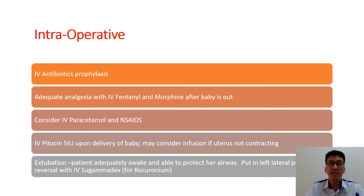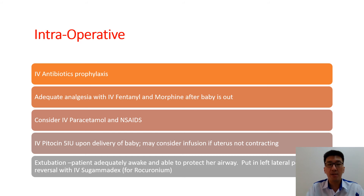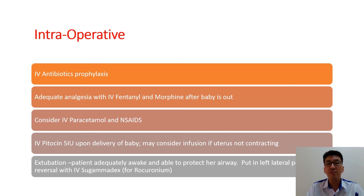Intraoperatively, as previously mentioned for regional anesthesia, we give antibiotic prophylaxis and then adequate analgesia with IV fentanyl or morphine after the baby is delivered. Consider IV paracetamol and NSAIDs if there are no contraindications for the mother. Once the baby is out, we give oxytocin 5 units to encourage uterine contraction and prevent uterine atony; you may consider an infusion of oxytocin if the uterus is not contracting well. The patient must be extubated fully awake so that she can protect her airway and avoid aspiration. Put the patient in the left lateral position if needed, and reverse with IV sugammadex if intraoperative muscle relaxation was maintained with rocuronium.